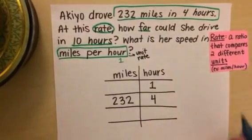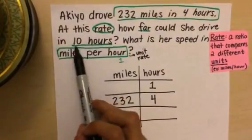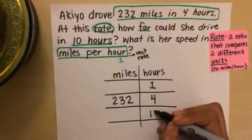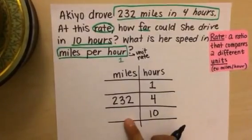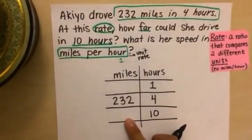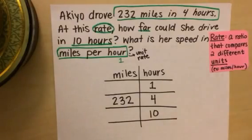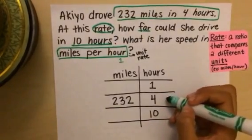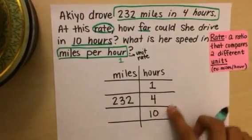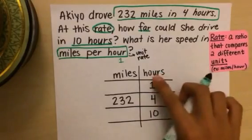And the last thing I'm going to fill in is this last piece of information, 10 hours. But I have to leave the miles blank because I don't know how many miles she drives in 10 hours yet because I haven't solved the problem. So what I like about ratio tables is that it's easy to look for relationships between the numbers. So remember that we only use multiplication or division when we're solving with ratios.